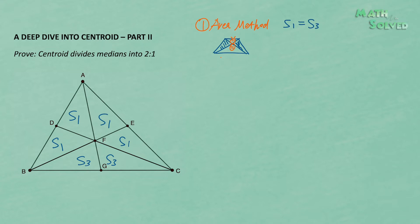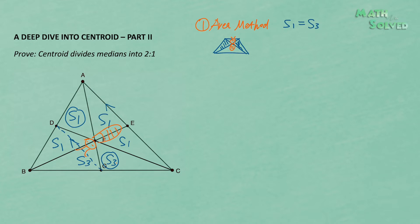In triangle ABC, to prove S1 is equal to S3, we can draw DG. Since D and G are the midpoints of sides AB and BC, DG is one of the mid-segments of the triangle, so DG is parallel to AC. Therefore, ADGC is a trapezoid. S1 and S3 are the two wings of the butterfly in this trapezoid, so S1 is equal to S3.